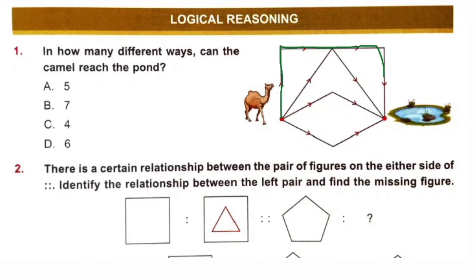Logical reasoning. Question number 1. In how many different ways can the camel reach the pond? This is way 1, way 2, way 3, way 4, way 5 and way 6. So, option D is correct. 6 different ways.